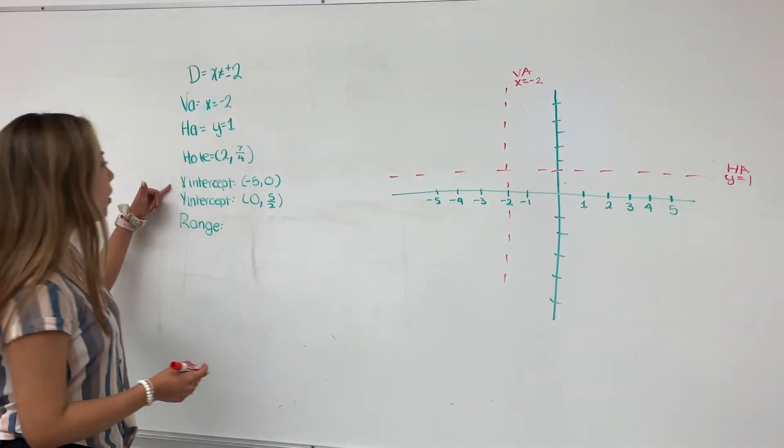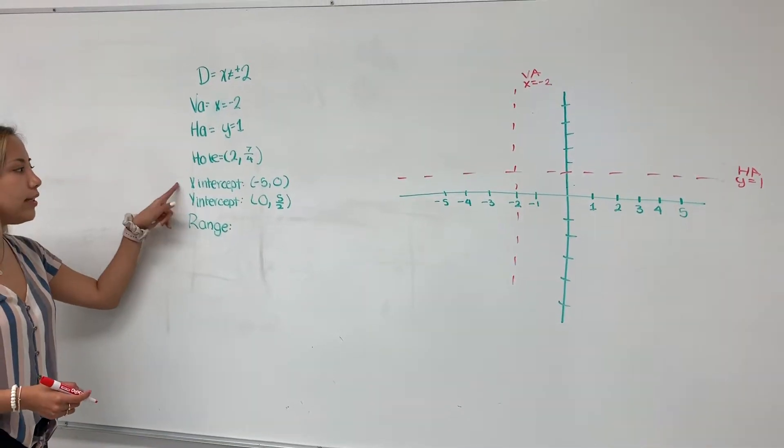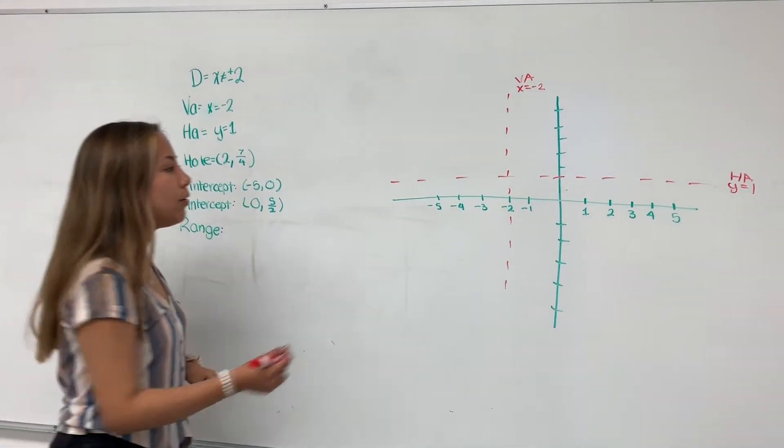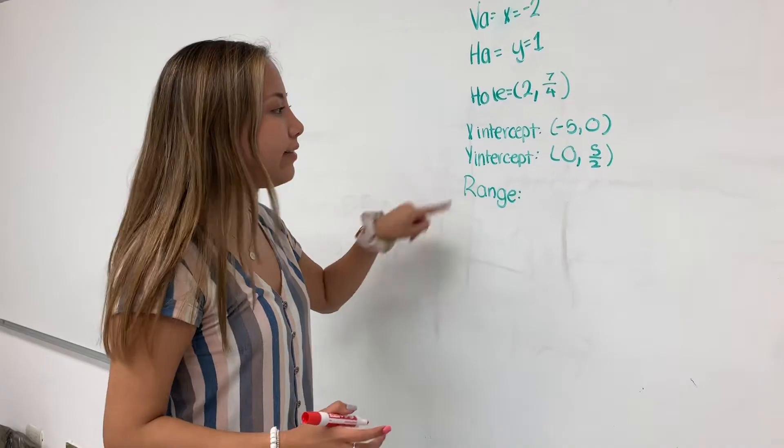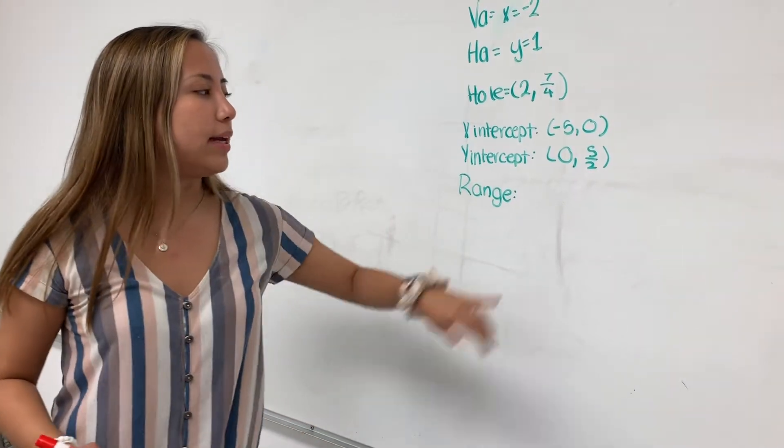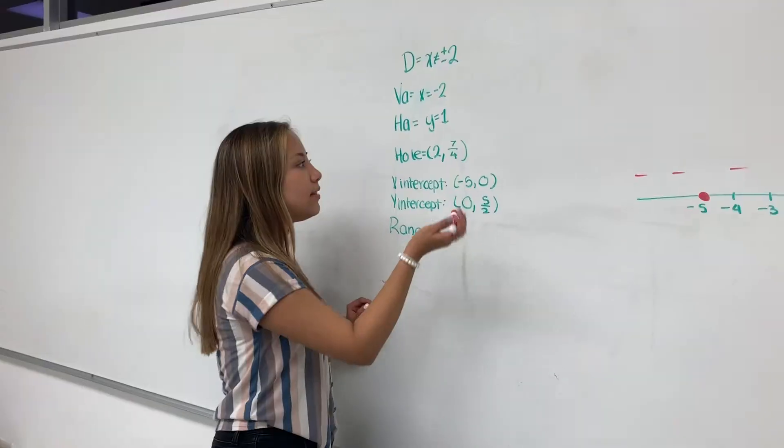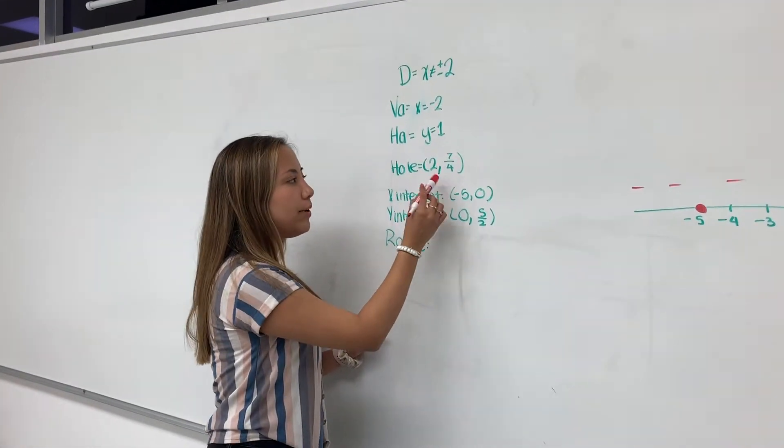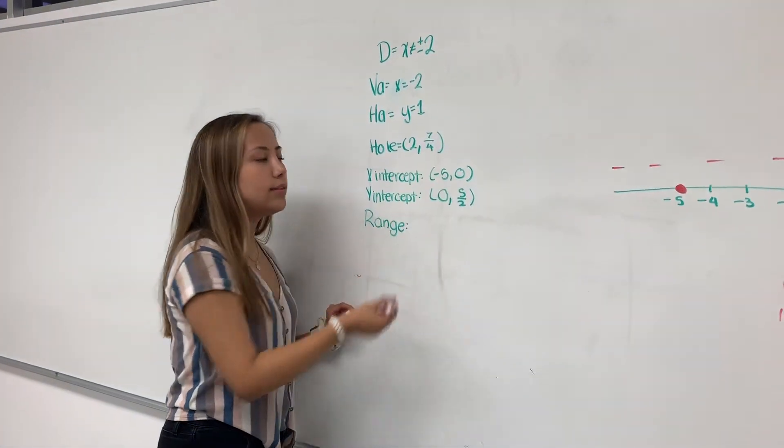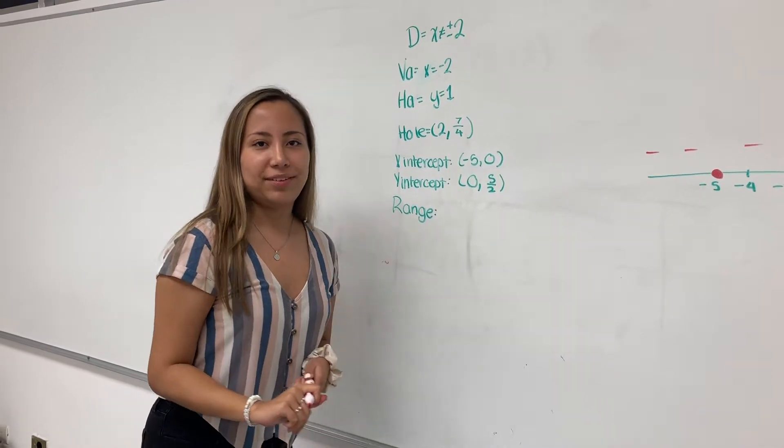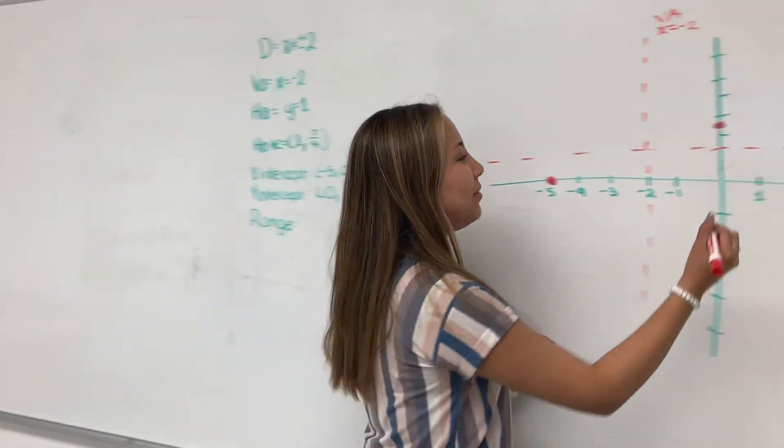Next we need to plot the x and y-intercept. The x-intercept is negative 5, 0. The next step is to plot the y-intercept, that is 0, 2.5. Then you need to plot the hole, that will be 2, 7 fourths, that is 1.7. Plot it like an open circle to identify that it is a hole.